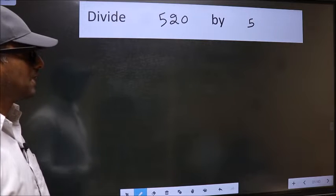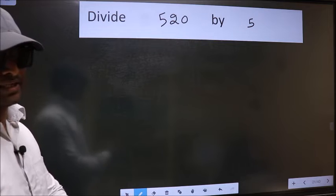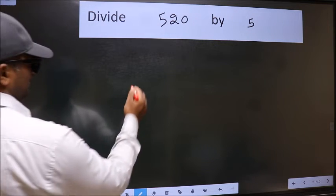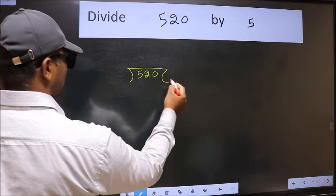Divide 520 by 5. To do this division, we should frame it in this way: 520 here and 5 here.